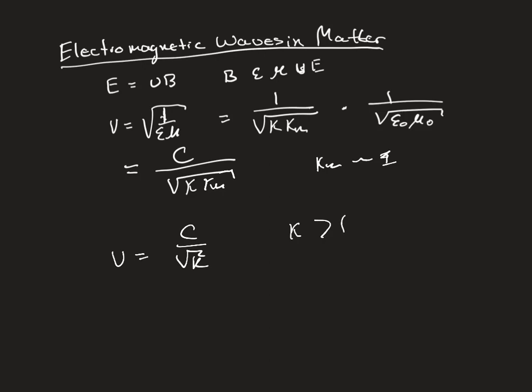Because the dielectric constant is always greater than one (if it wasn't, why would we use a dielectric?), that means the speed through the material is going to be less than the speed of light.